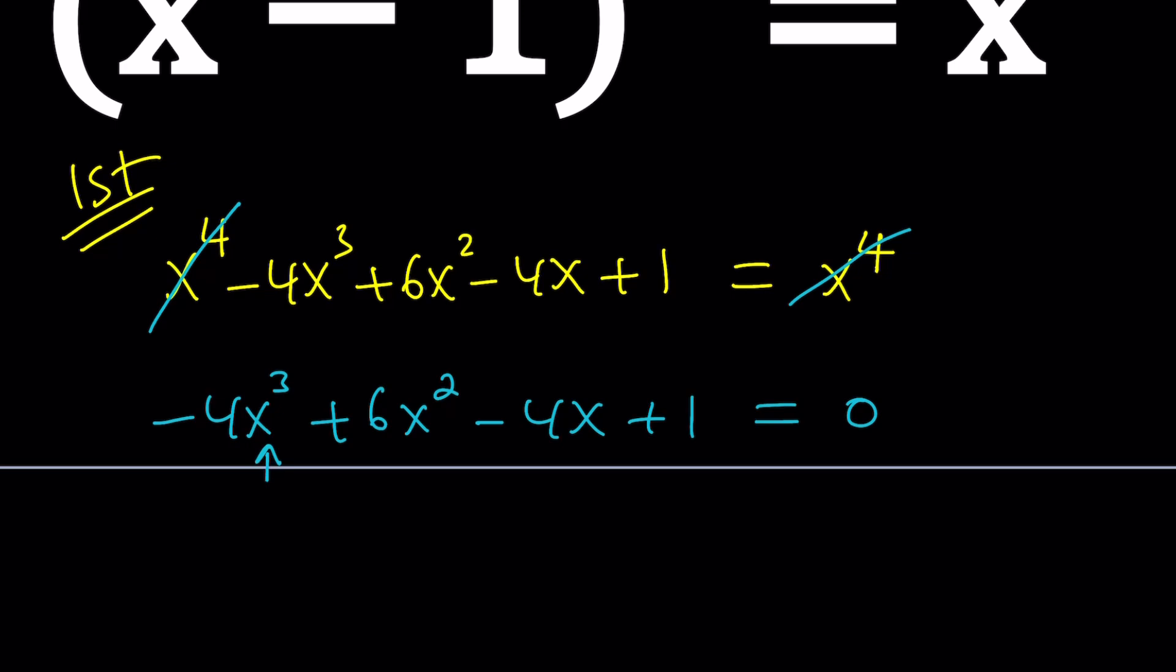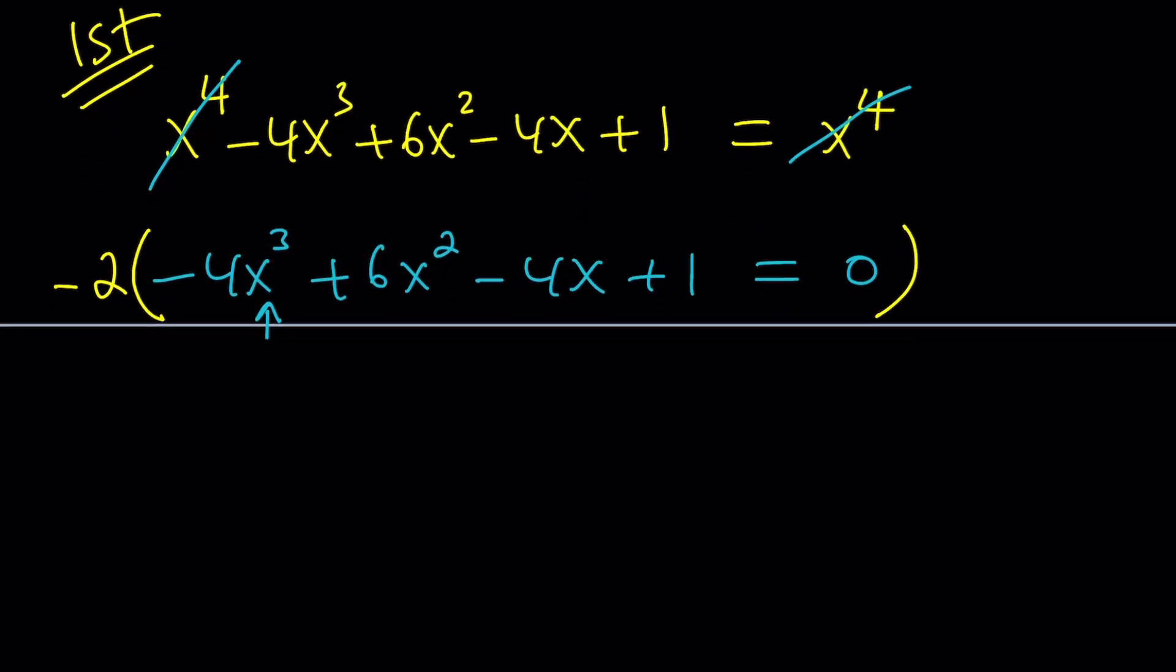So let's multiply both sides by -2. When you distribute, obviously -2 times 0 will be 0. This gives 8x^3 - 12x^2 + 8x - 2 = 0. And then at this point, you can do a couple things. You can either replace x with y/2 or any other variable, or you can do this.